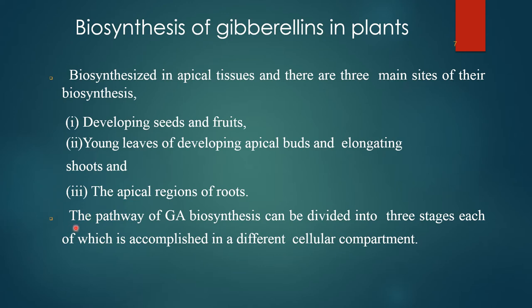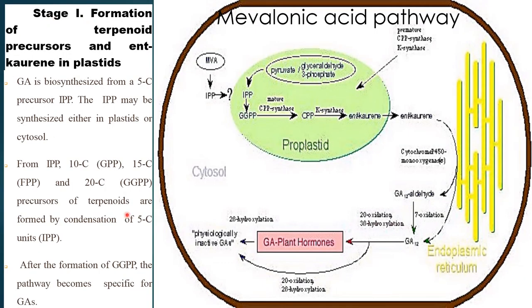The pathway of Gibberellin biosynthesis can be divided into three stages, each of which is accomplished in a different cellular compartment. In the first stage, formation of the terpenoid precursor ent-corin in the plastid takes place. This pathway is also called the mevalonic acid pathway because isopentenyl pyrophosphate (IPP) is produced by mevalonic acid.